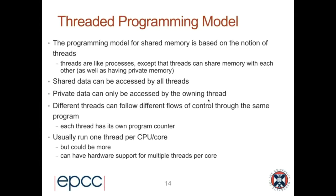If you're running OpenMP or other multi-threaded programs on your own laptop or desktop, hyper-threads will typically be enabled, and your hardware might report more logical cores than physical ones. For example, it might say you have eight cores when you actually have four physical cores each with two hyper-threads. Your OpenMP compiler might run eight threads by default, which may not be optimal if you only have four physical cores.